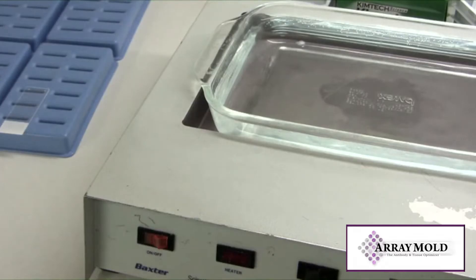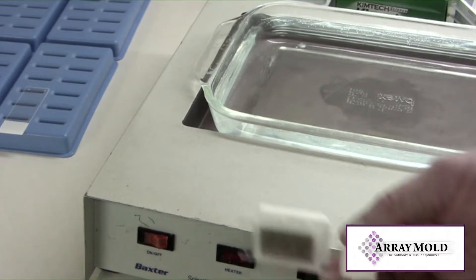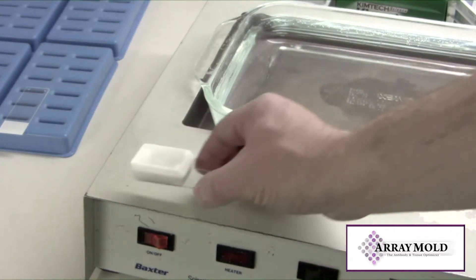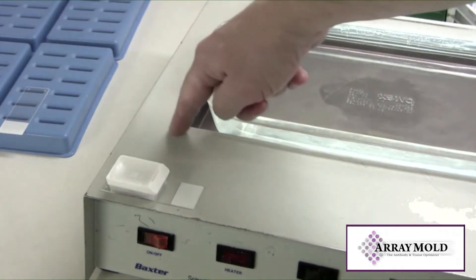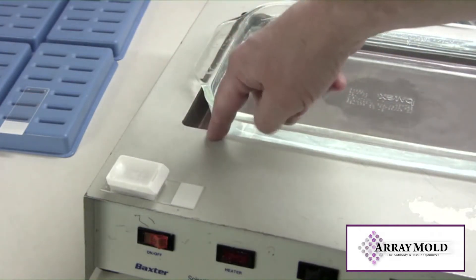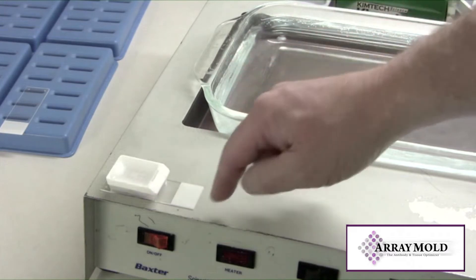Since I only have one oven, the array block still needs to stay warm and soft while this single slide heats up. I'm placing my array block on the side of my water bath. It's warm enough to keep the block soft while the single slide is heating up.